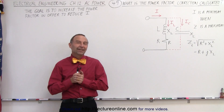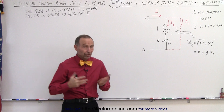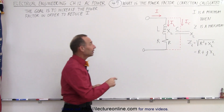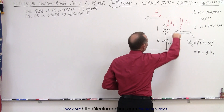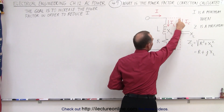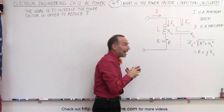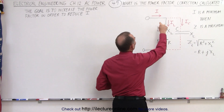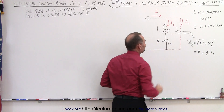Welcome to Electronline! Now let's calculate the power factor correction. We have to realize that the goal is to reduce the current to the load by putting a capacitor in parallel with the original load circuit so that we can increase the impedance and therefore force a decrease in the current provided to the entire circuit.